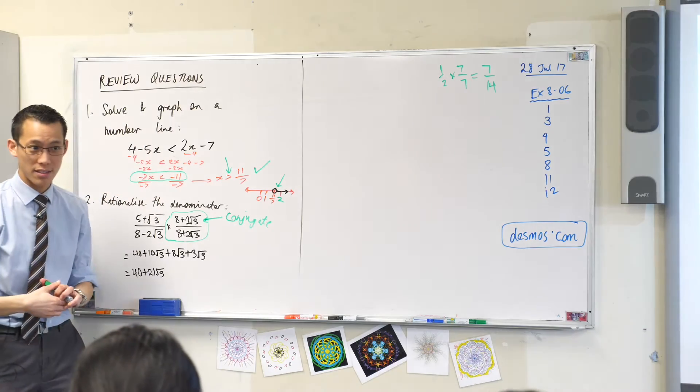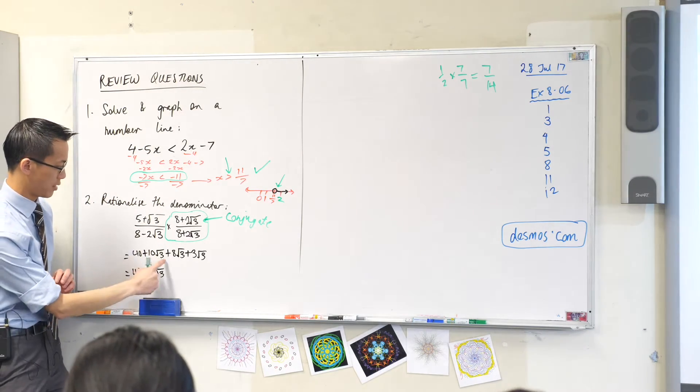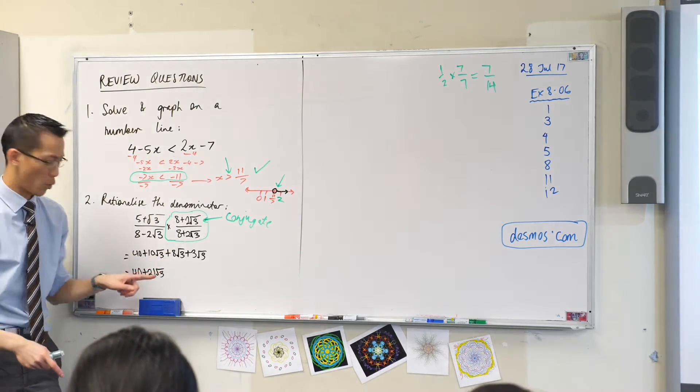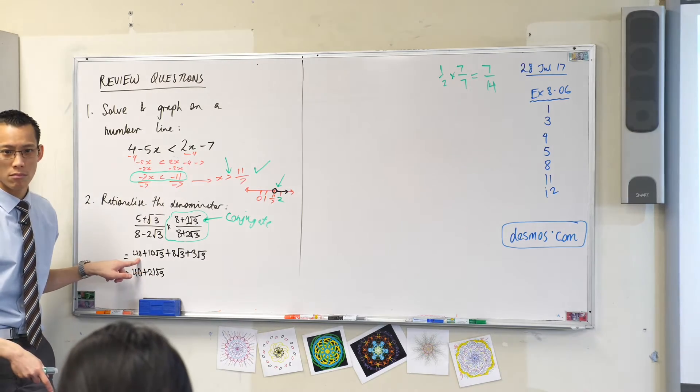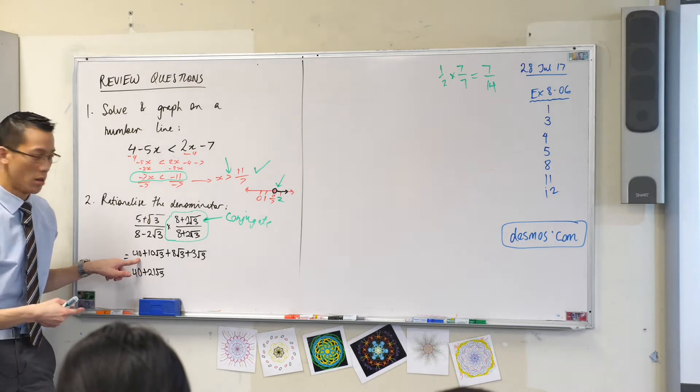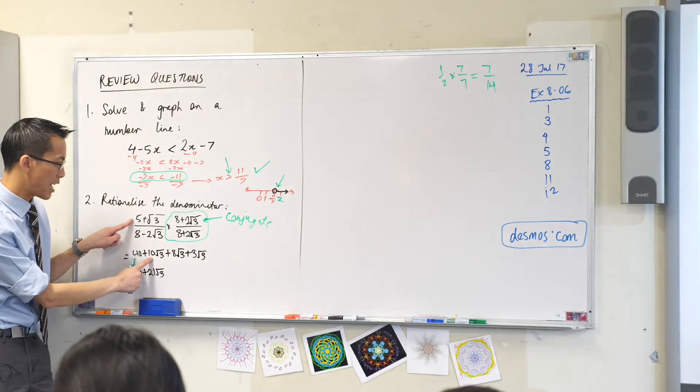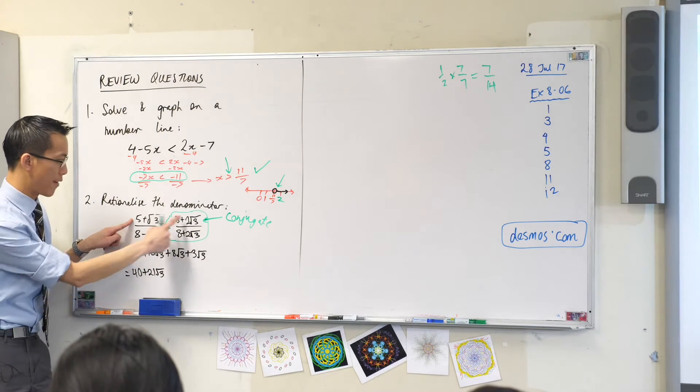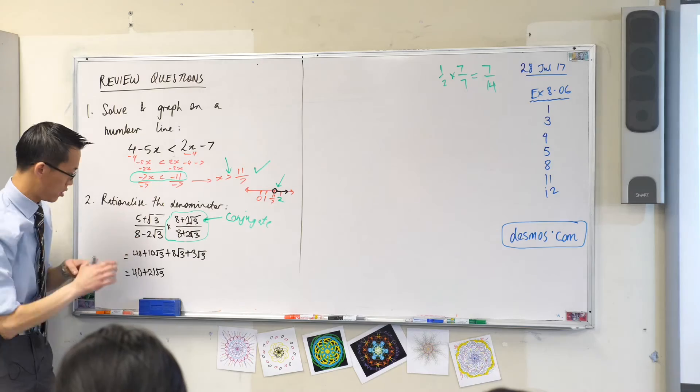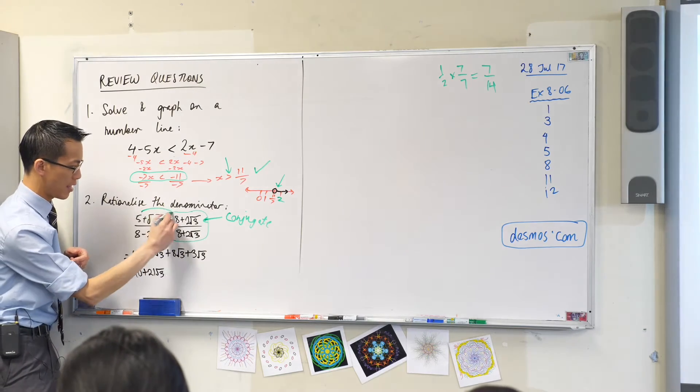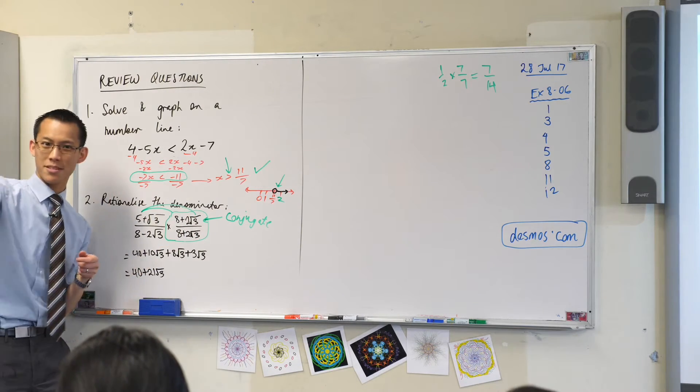Now let's have a look at the next line. Have a look at these numbers. These numbers are important. Where does 40 come from? You have a look at the working. You tell me where it comes from. Yeah, good. 5 times 8. Where does 10 root 3 come from? 5 times 2 root 3. So you can see what she's doing. She's doing that thing. Do you remember? You all do it with your hands. You double.